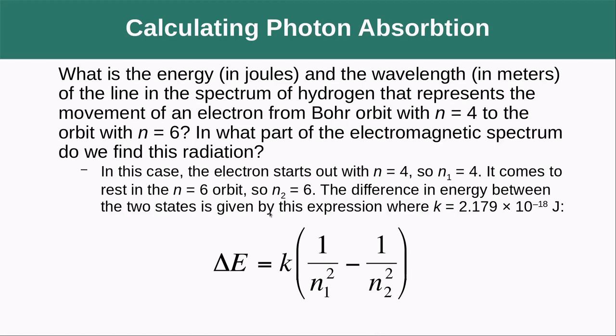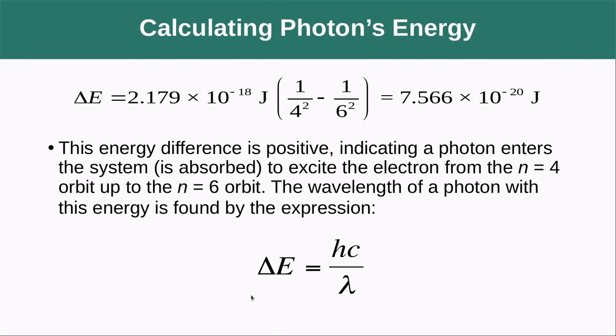The difference in energy between the two states is given by this expression, and we got our k value here of 2.179 times 10 to the negative 18 joules. We'll plug him in there. Plugging in this value we get the k value times 1 over 4 squared, 1 over 16, minus 1 over 6 squared, 1 over 36. We see that this is going to be a positive value and we wind up getting 7.566 times 10 to the negative 20 joules. This energy difference is positive, indicating that the photon enters the system to excite the electron from the n equals 4 orbit up to the n equals 6 orbit.